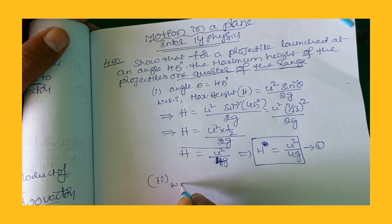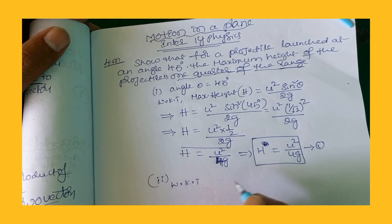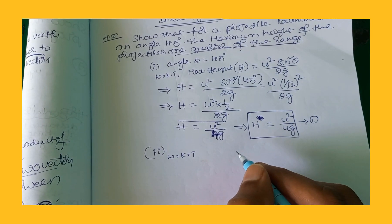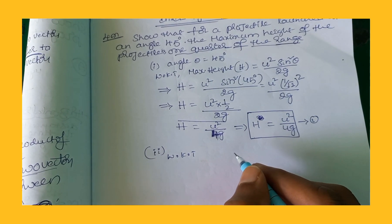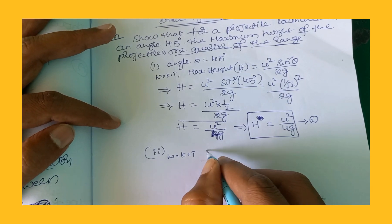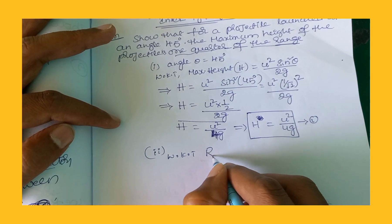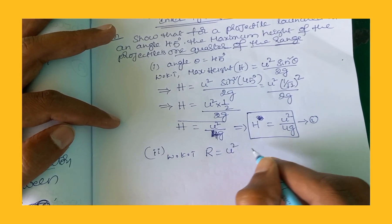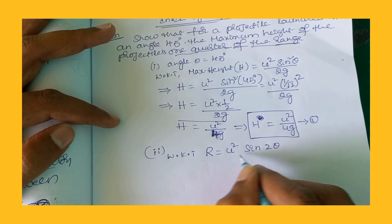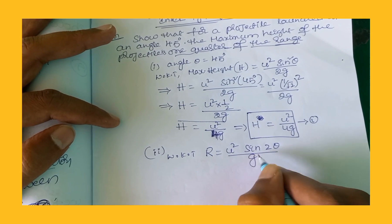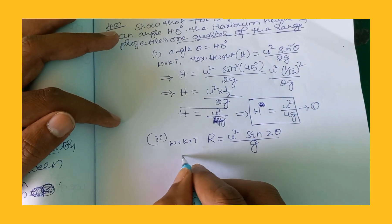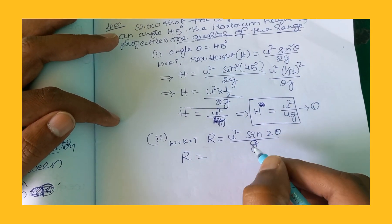Now we want to find the range. We know that range R is given by the formula u squared sine 2 theta divided by g. The derivations of these two important formulas were explained in a previous video.